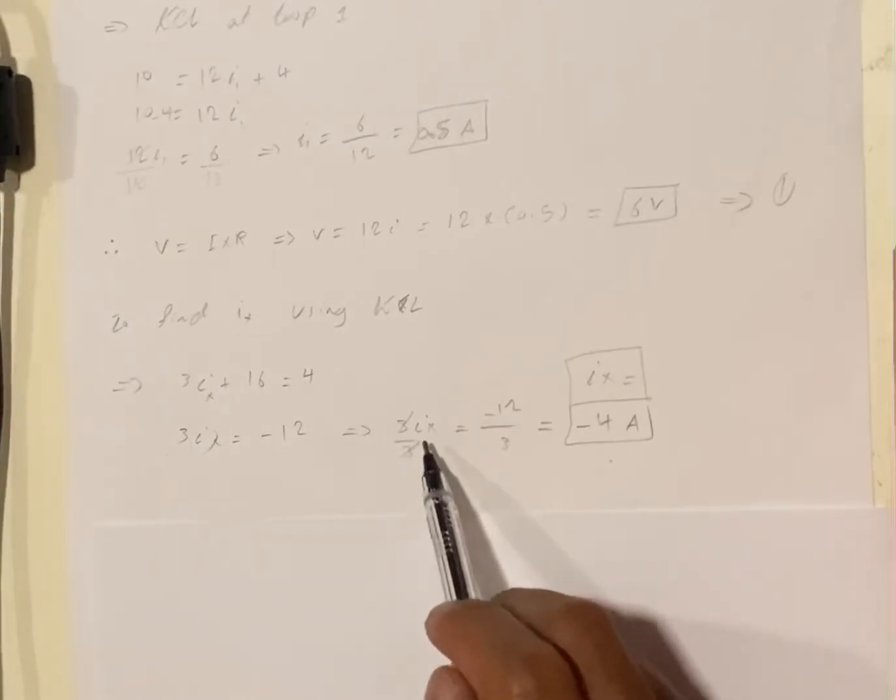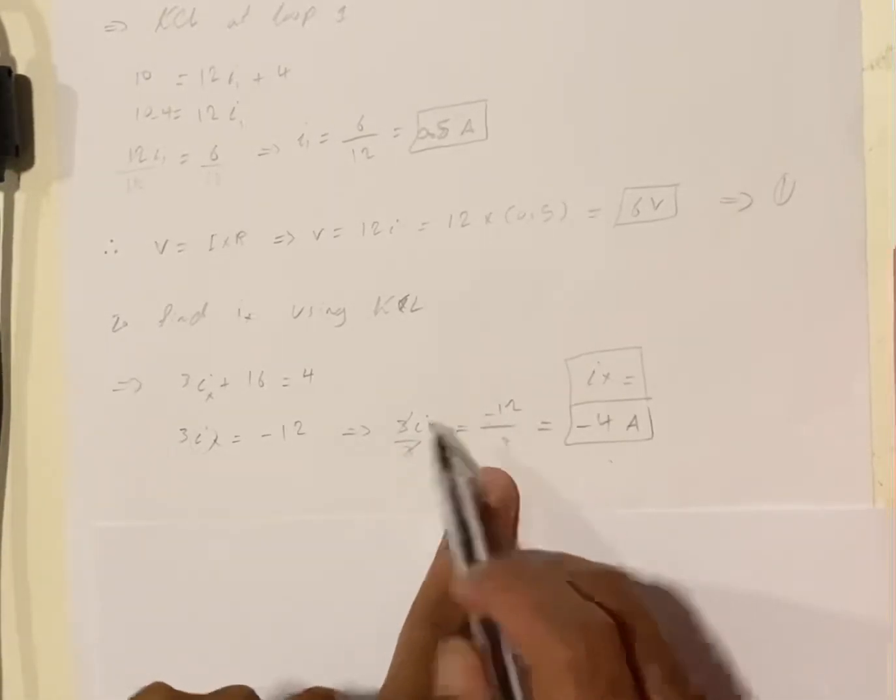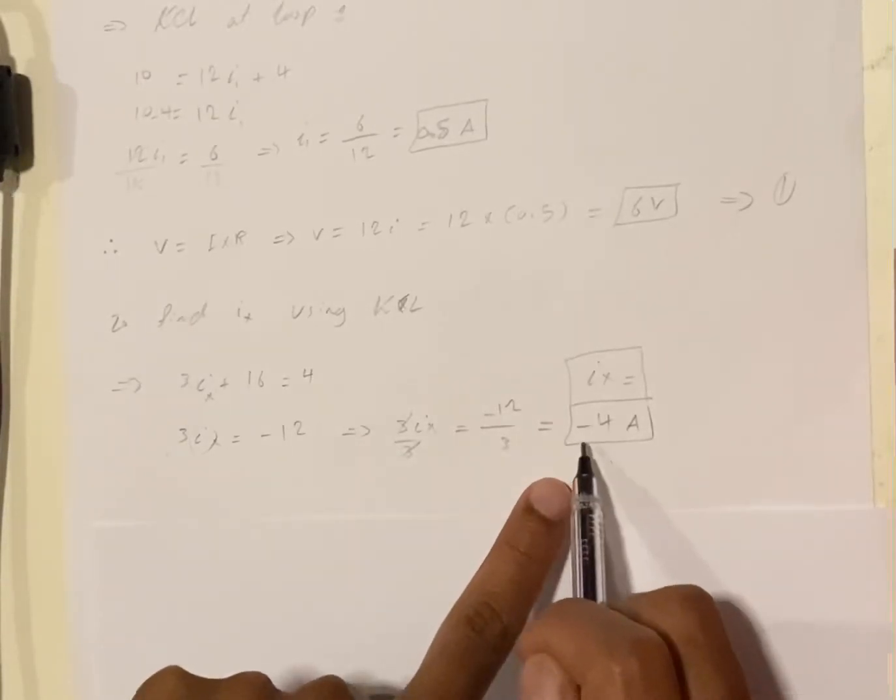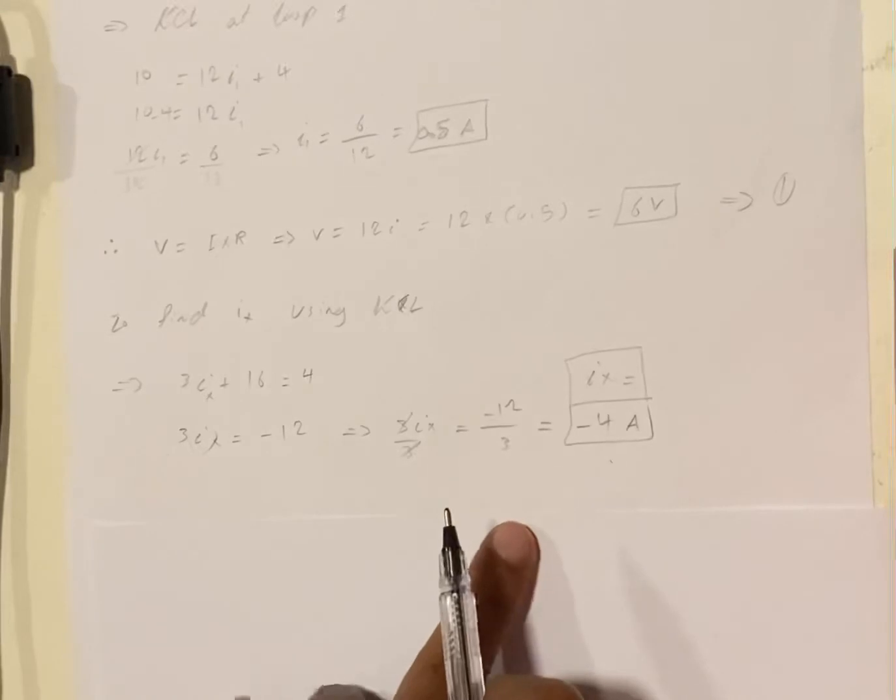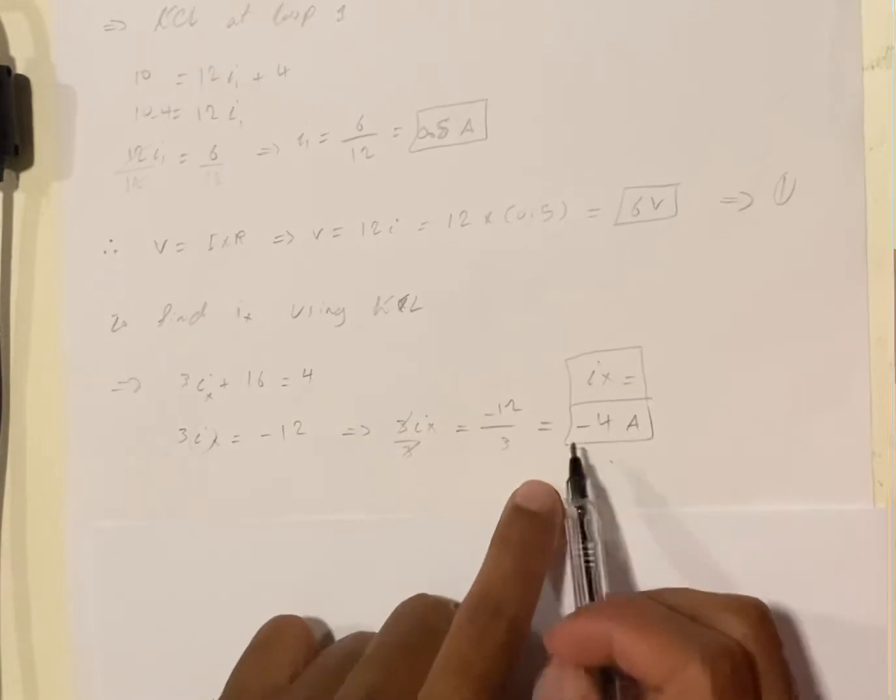To get Ix we're gonna divide by 3. We divide minus 12 by 3 which is minus 4 amperes, and here is the value of Ix.